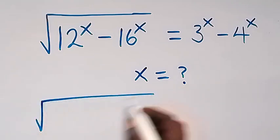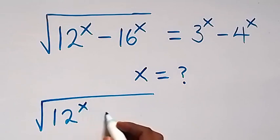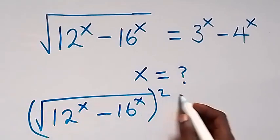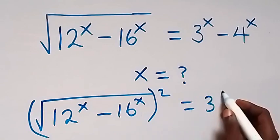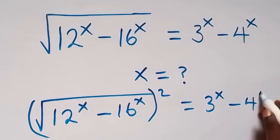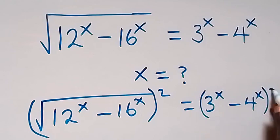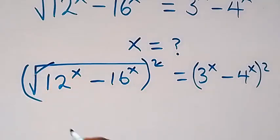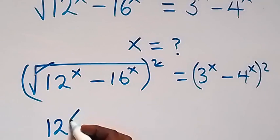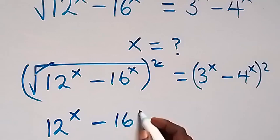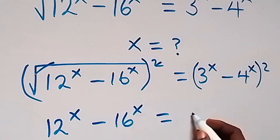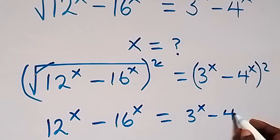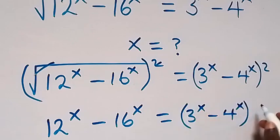Then we have square root of 12 raised to power x minus 16 raised to power x, all squared, equals to this side: 3 raised to power x minus 4 raised to power x, all squared as well. Then on this side, the square will cancel the square root, so we have 12 raised to power x minus 16 raised to power x equals to 3 raised to power x minus 4 raised to power x, then raised to power 2.